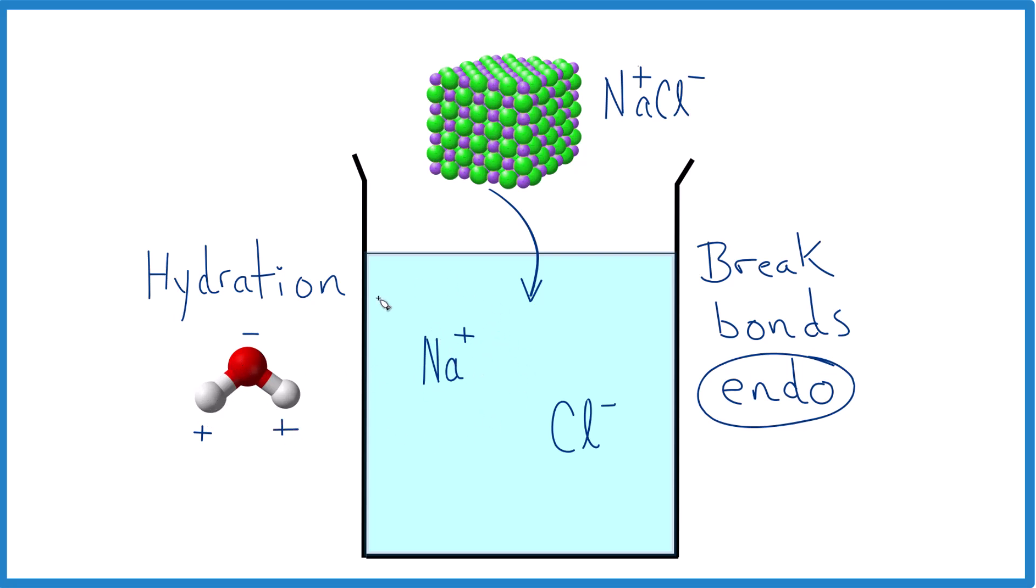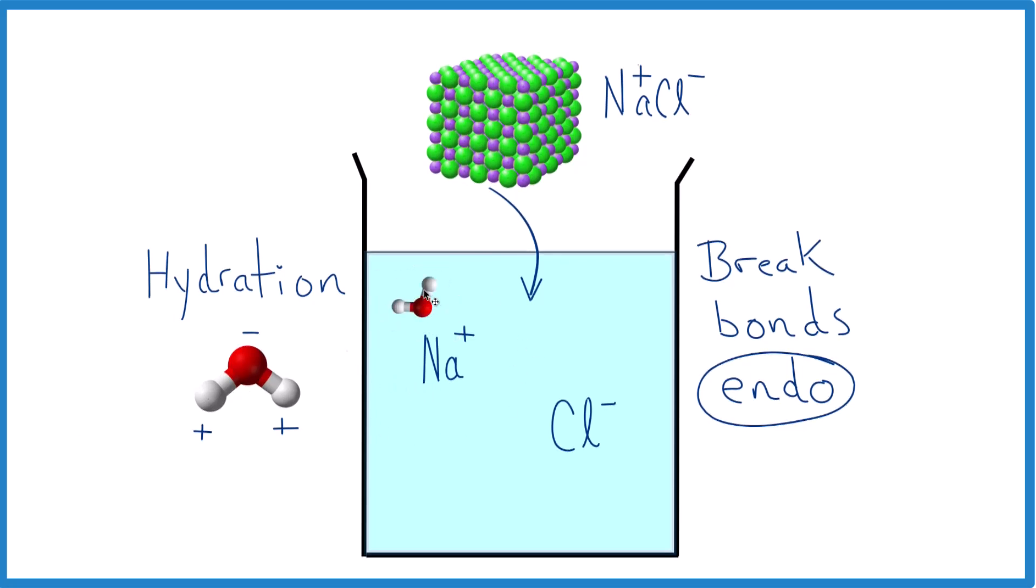It has negative sides and positive sides due to the difference in electronegativity between the oxygen and the hydrogen. So for sodium, it would be surrounded by water molecules like this. So these would line up around the sodium so that negative side is near the positive.